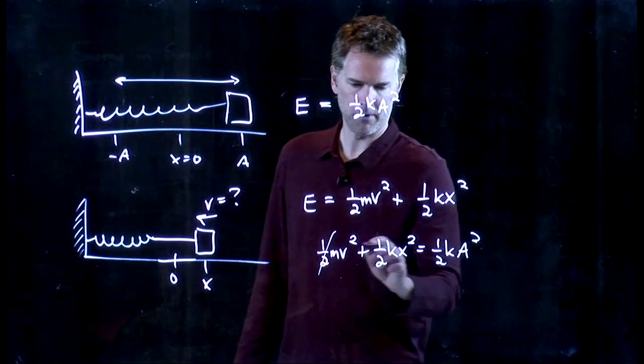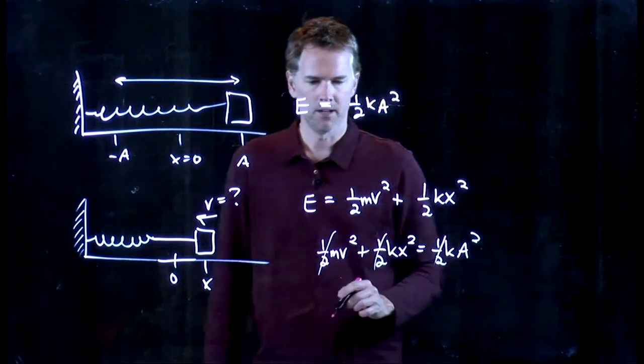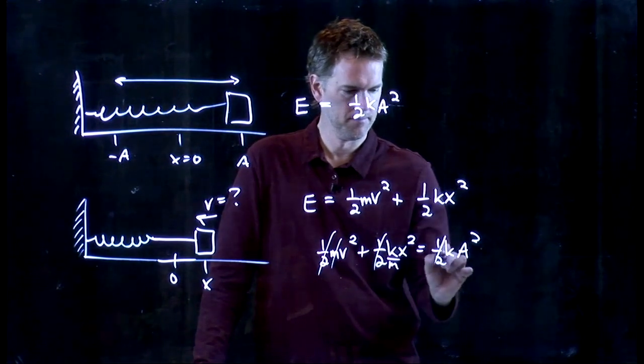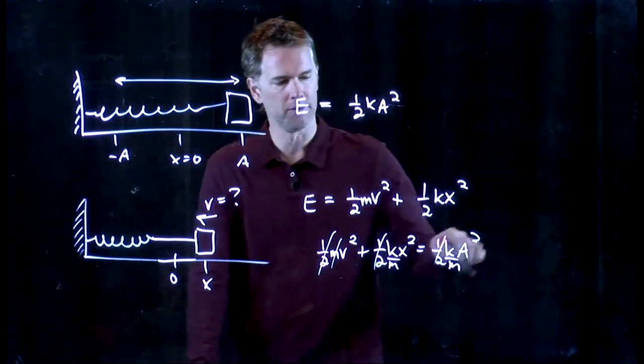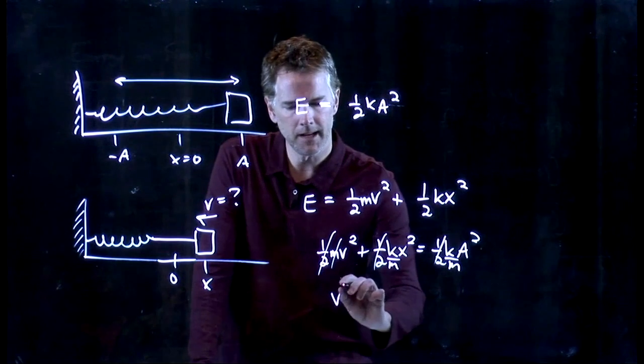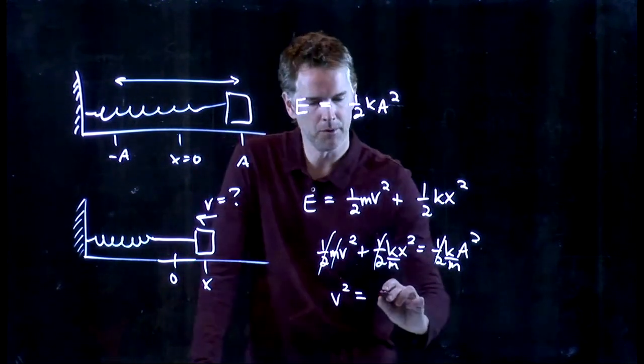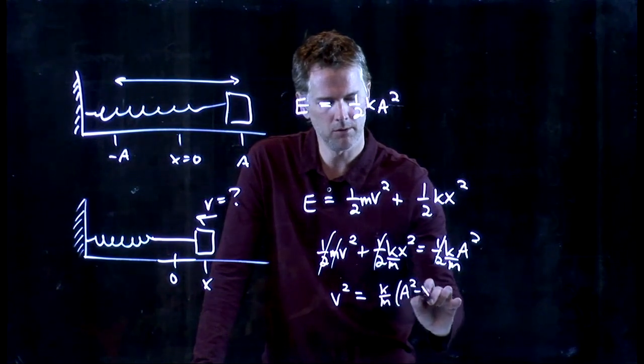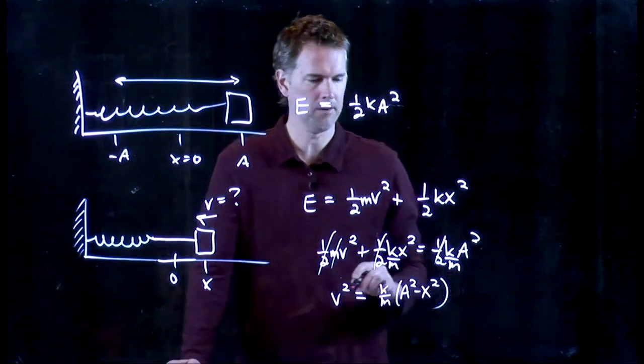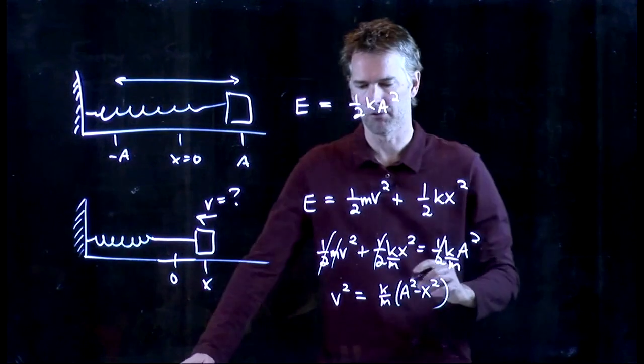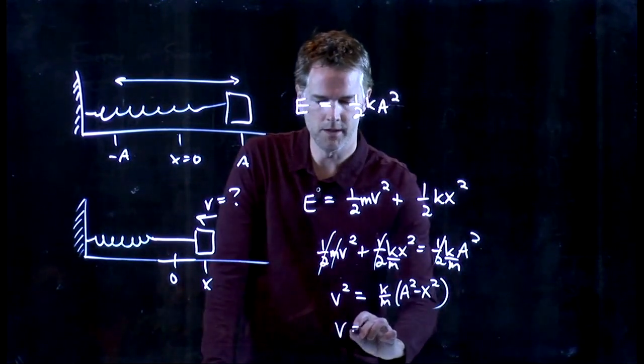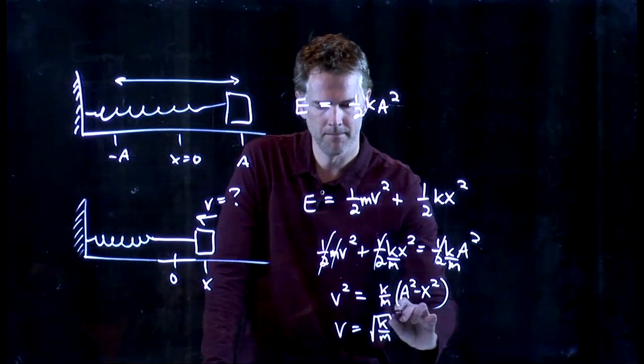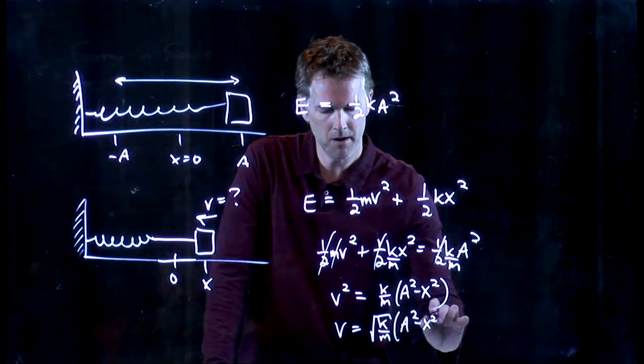Multiply both sides by 2, that gets rid of the half. Divide everything by m, and move this over to the other side. And you get V squared is equal to k over m times a squared minus x squared, and now you can take the square root.